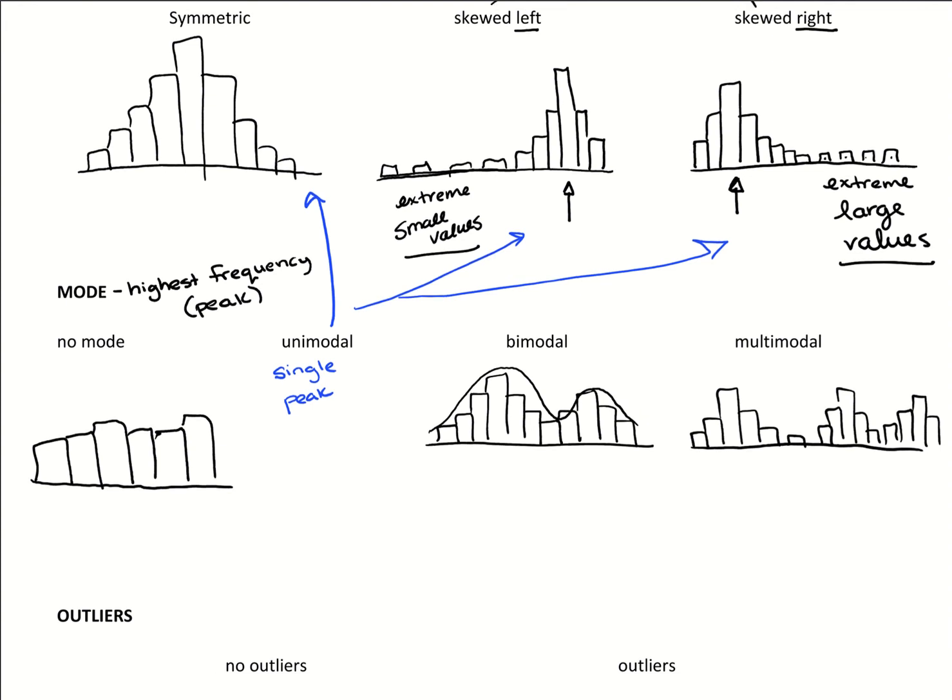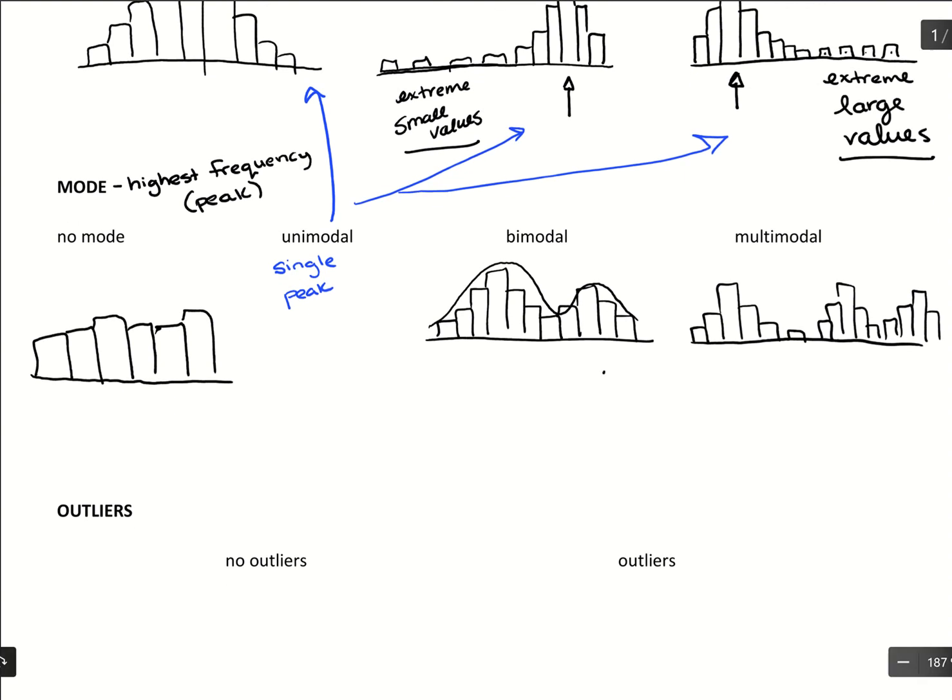Now we want to be careful of bimodal and multimodal because what they do is they suggest subgroups. What it tells us is that there's probably some subgrouping in our data, and it would be better to actually separate the data.